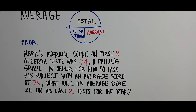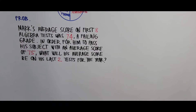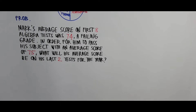In order to visualize what's going on in this problem, we have to illustrate the average pie circle for each instance. There are three instances: the first eight tests, the last two tests, and a third average pie to indicate the total of all the exams for the whole year. Let's do it now — we have three circles and we need to indicate their respective contents.